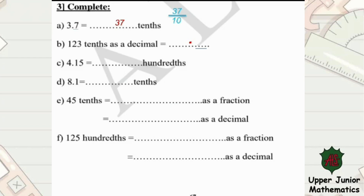We write our digits starting from the right side, so I start writing the 3. No more places in the decimal part, so the 12 will be written as a whole number.